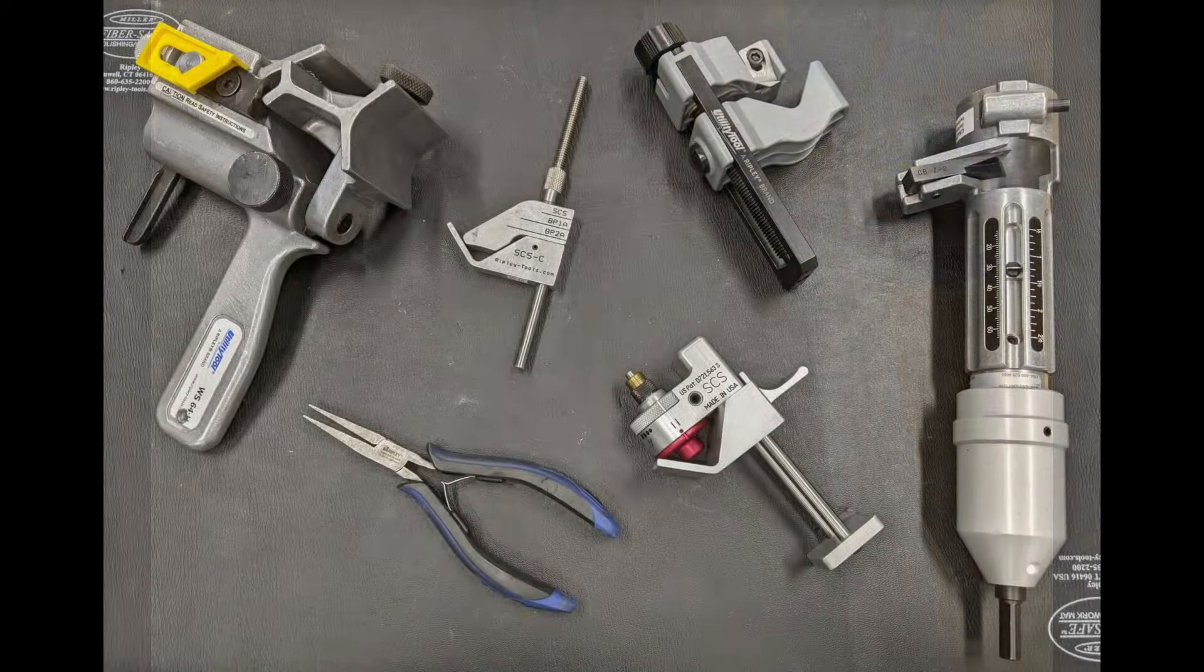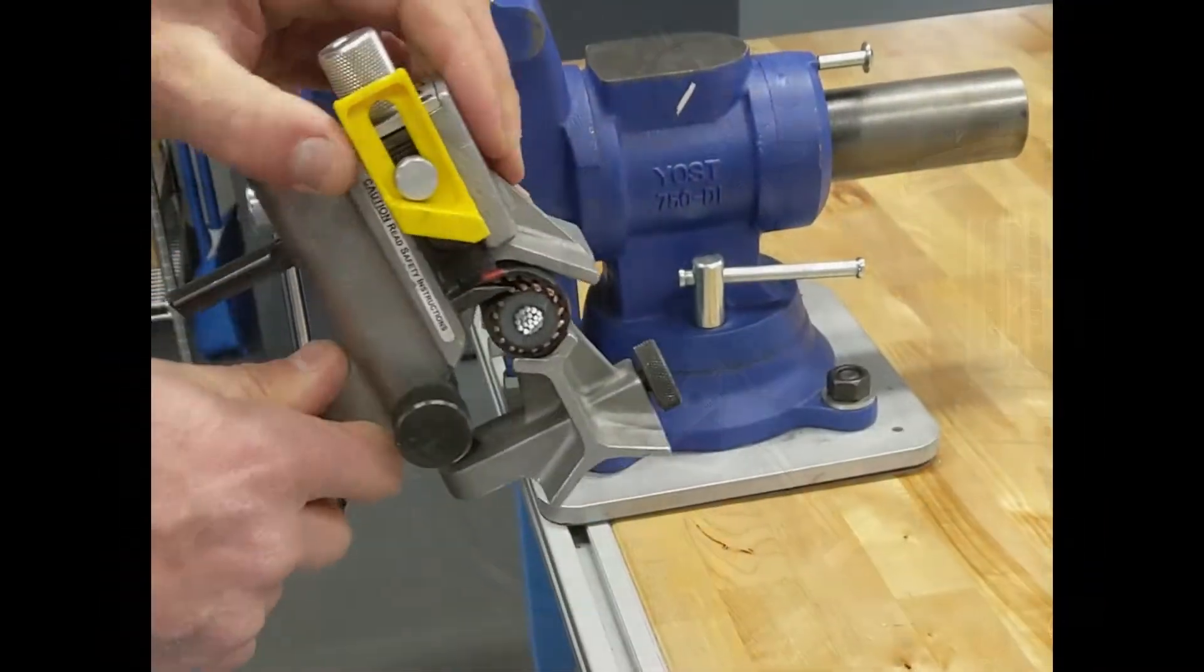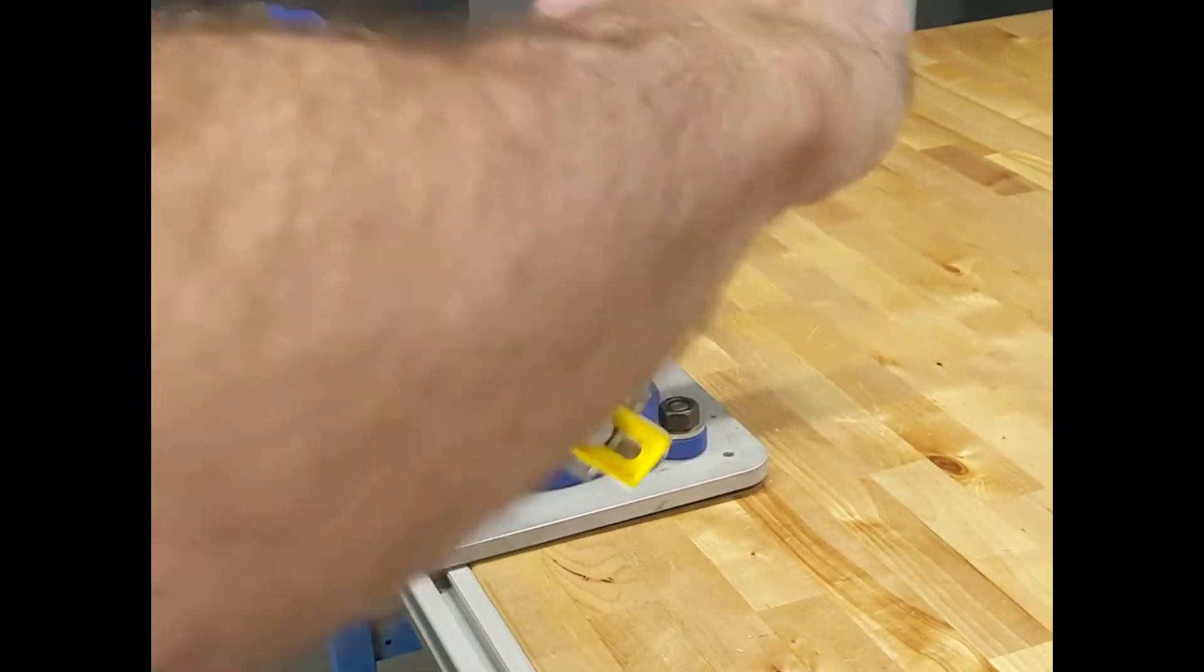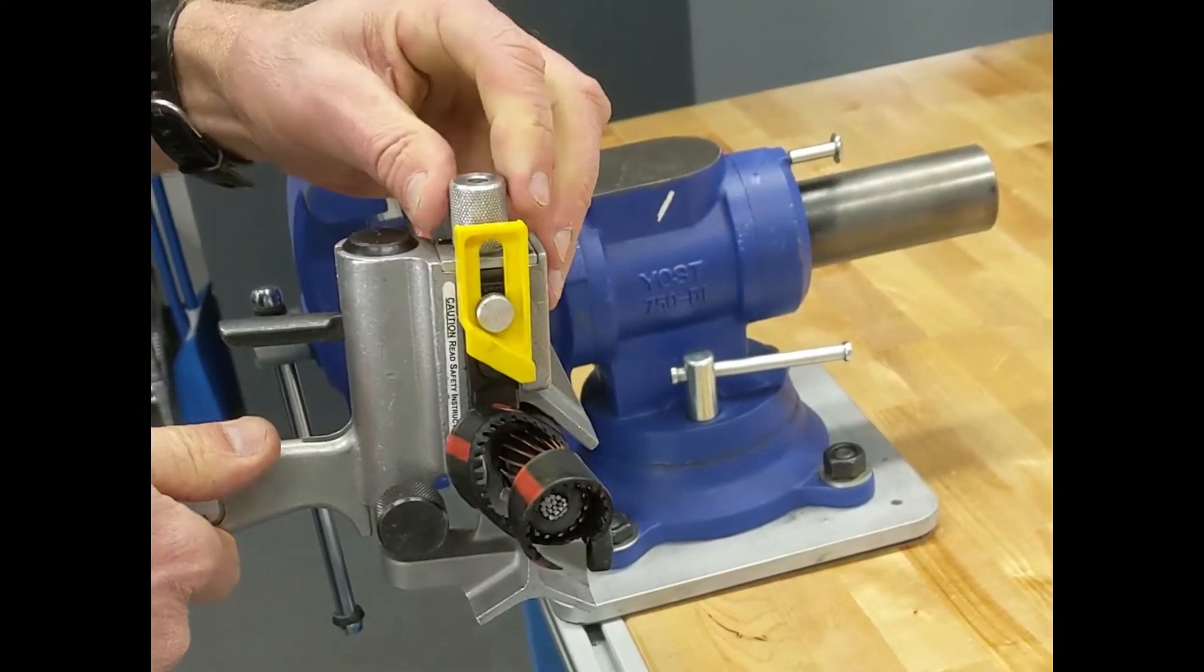Today we reviewed a number of tools but the focus was on the SCS. Ripley also offers a wide selection of tools such as the WS64 which is what we use to prepare cable for the demonstration. This is a great tool for JCN underground cable jacket removal.